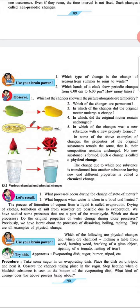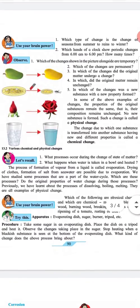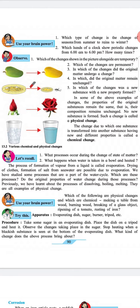In some of the above examples of changes, the properties of the original substances remain the same, that is their composition remains unchanged. No new substance is formed. Such a change is called physical change. The change due to which one substance is transformed into another substance, having new and different properties, is called a chemical change.